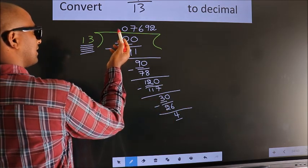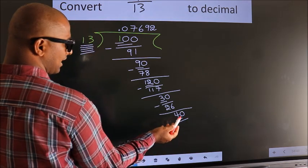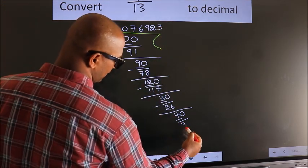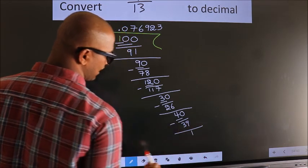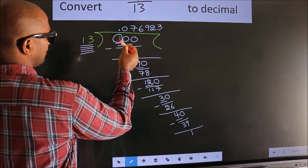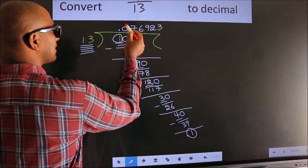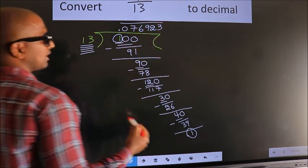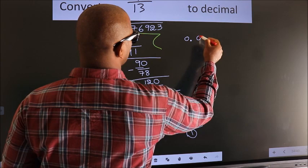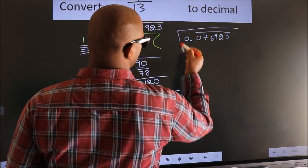We already have the decimal, so we can directly bring a 0 — so 40. A number close to 40 in the 13 times table is 13×3=39. Now we subtract and we get remainder 1. We observe we had 1 at the start and we got 1 again — that means we get a bar on all these numbers. Therefore our answer is 0.076923 with a recurring bar. This is our answer.